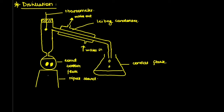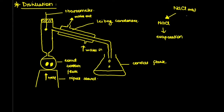Heat is supplied to the round bottom flask. First, let's consider when to use distillation. For example, if I have aqueous NaCl and I want to obtain NaCl (the solute), I'd do evaporation. But if I want to obtain the water (the solvent) from the solution, I do distillation. So distillation is used to separate the solvent from the solution.